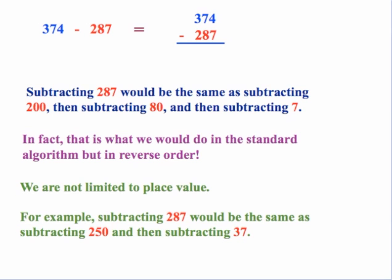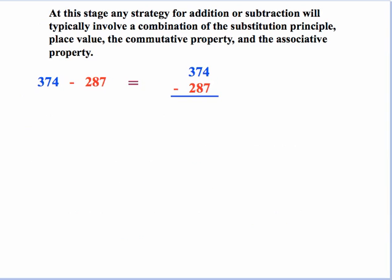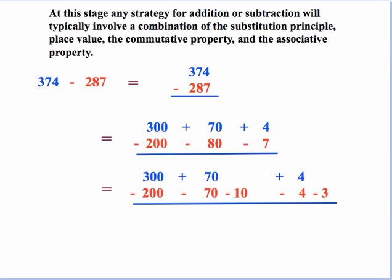First we subtract 7 in the ones place and then we subtract 80 and then we subtract 200. Now we're not limited to place value. For example, subtracting 287 would be the same thing as subtracting 250 and then subtracting 37. In fact, we could break this down to whatever we need it to depending on the context. So if we look at our problem again and start thinking in this manner, let's break it up into place value. So again, what I've done is we've taken this one subtraction problem and actually split the subtraction up into three different subtractions.